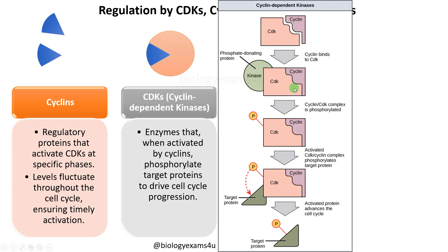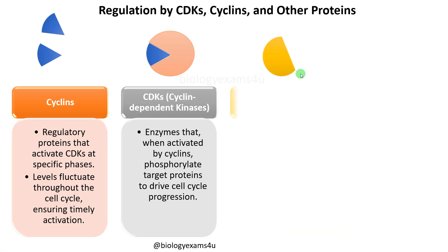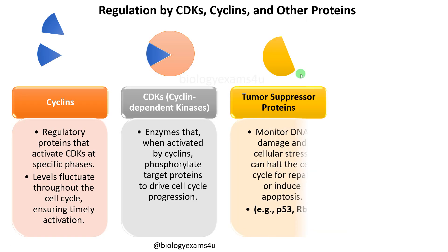Cyclin binds to CDKs, so the cyclin-CDK complex is phosphorylated, and this activated cyclin-CDK complex then phosphorylates target proteins. These activated proteins advance the cell cycle to the next phase.